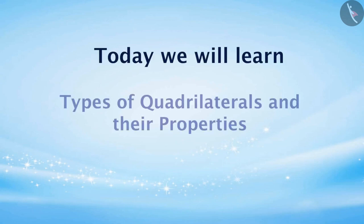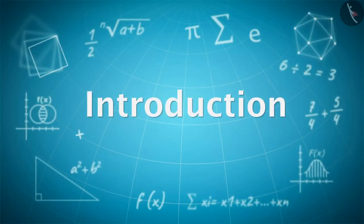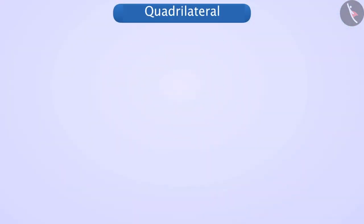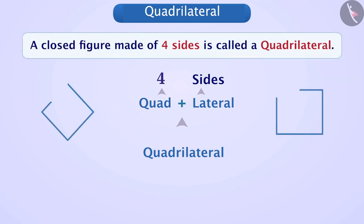Today we will learn about types of quadrilaterals and their properties. First, let us understand the meaning of the word quadrilateral. The word quadrilateral is made of 'quad' plus 'lateral' — quad means four and lateral means sides. A figure made of four sides is called a quadrilateral.